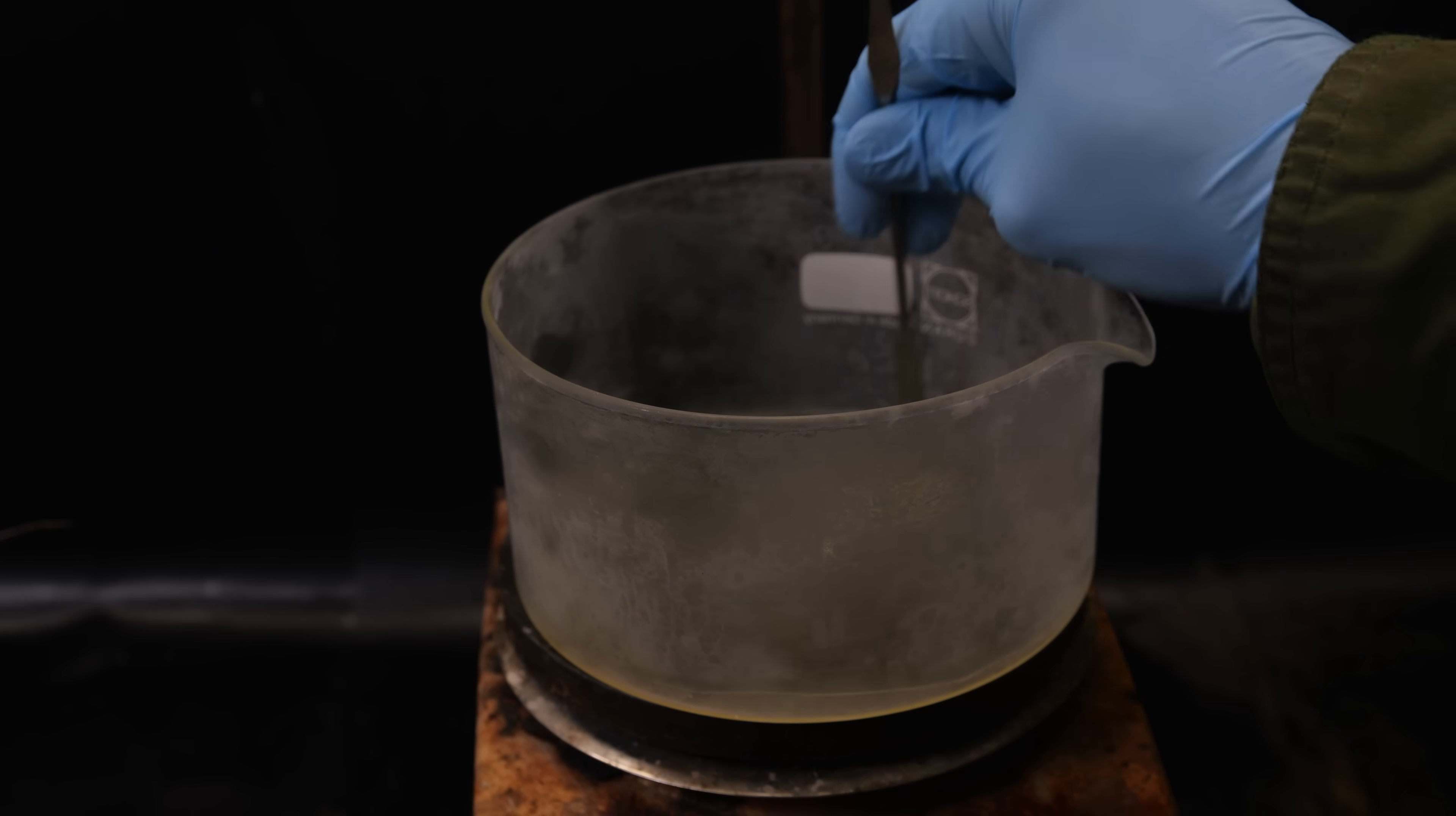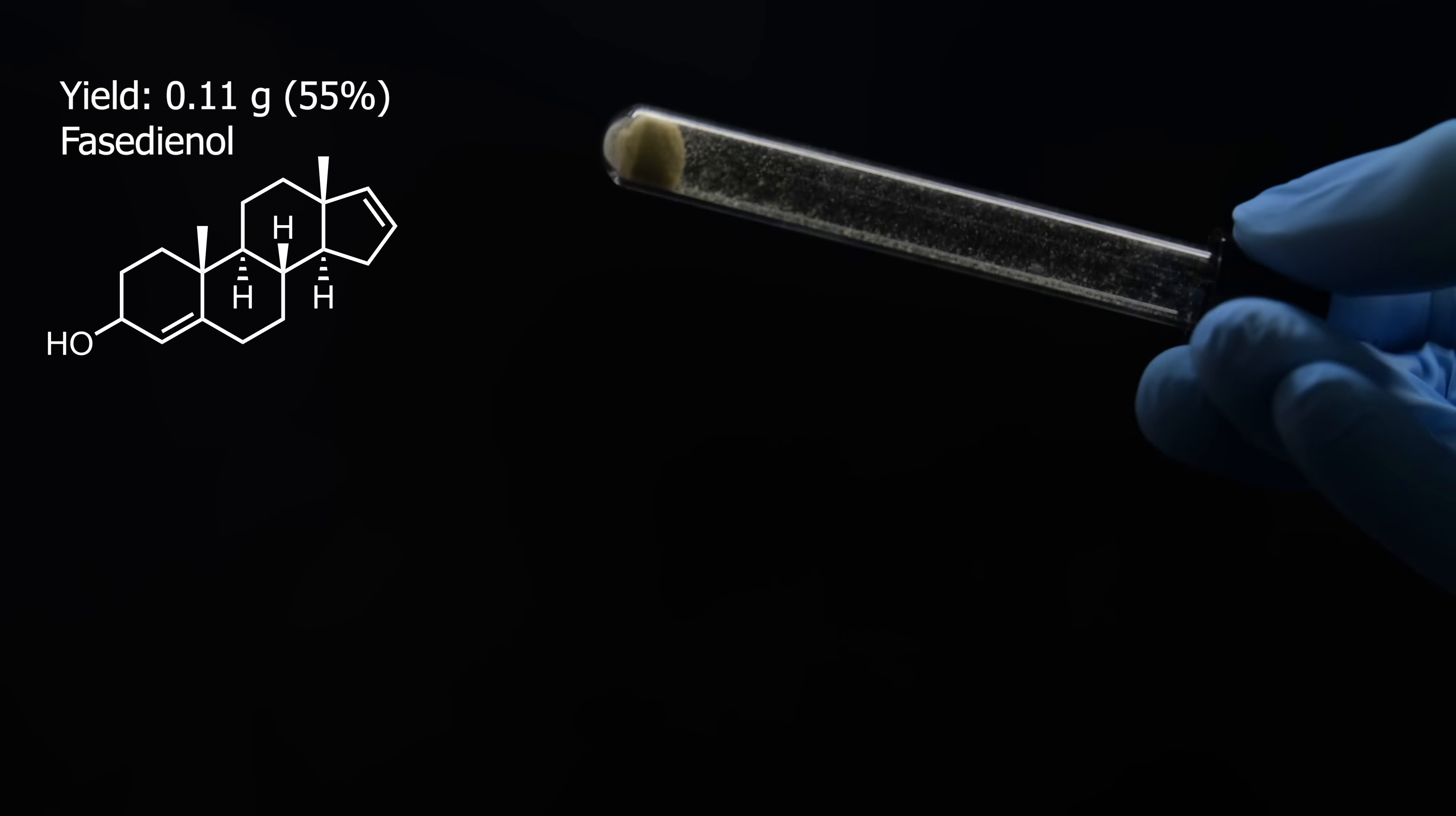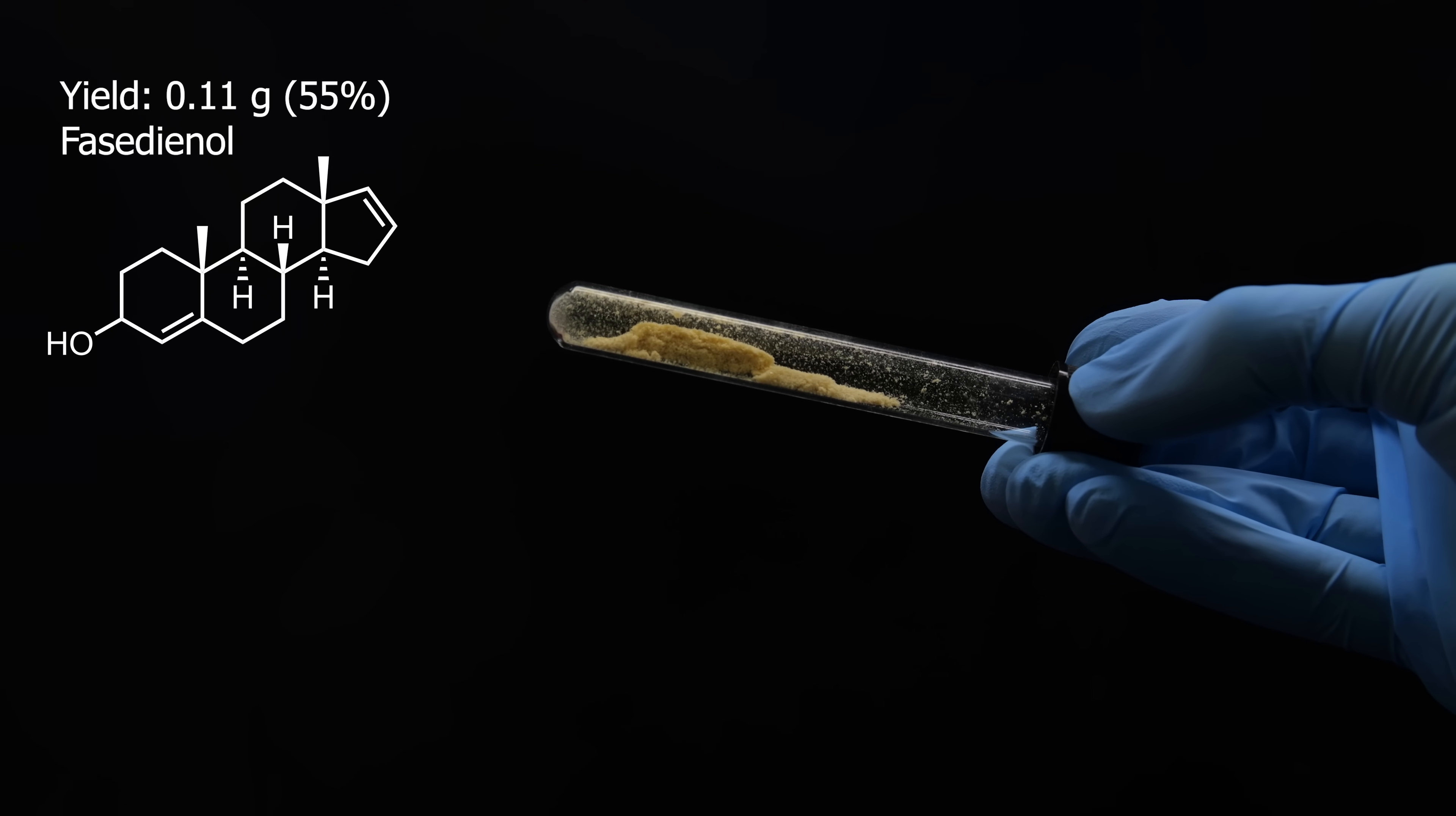With some work, it can now be scraped off, and forms a slightly yellow powder. When that's done, I moved it all into a vial, and the yield turned out to be 0.11 grams, or about 55%, assuming this and the starting material are dry and pure.